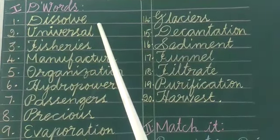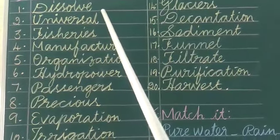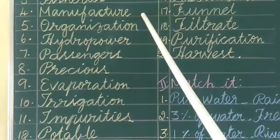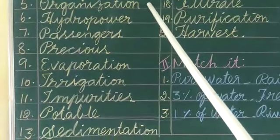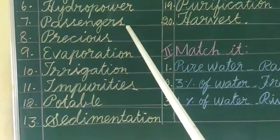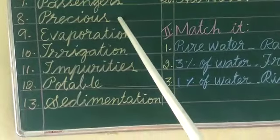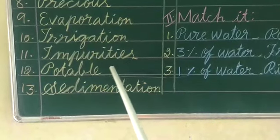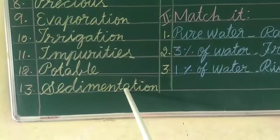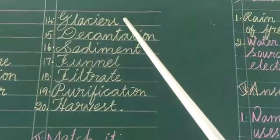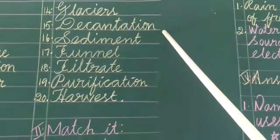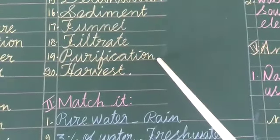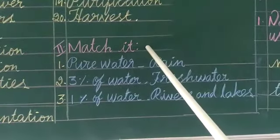First one: Diverse, Dissolve, Universe, Viseries, Manufacture, Organization, Hydropower, Passengers, Previous, Evaporation, Irrigation, Impurities, Potable, Sedimentation, Glaciers, Decondation, Sediment, Funnel, Filtrate, Purification, Harvest.